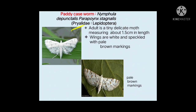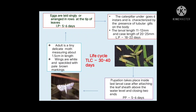Like the stem borer discussed last class, the paddy case worm also belongs to the family Pyralidae and order Lepidoptera. The adults are tiny, delicate moths about 1.5 centimeters in length. Wings are white in color and speckled with pale brown markings. In images it may look large, but it is actually very small — you can judge its size by the rice leaf it sits on.